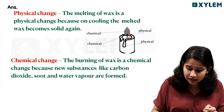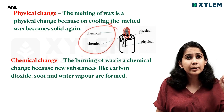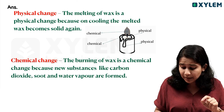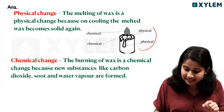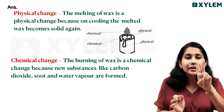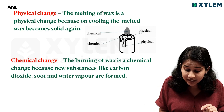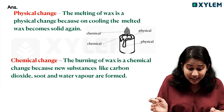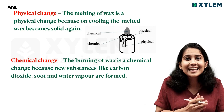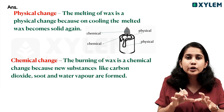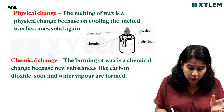When the candle burns, the wax melts. At the same time, the wax burns. The burning is the chemical change, and the melting of wax is the physical process. So when a candle burns, you can see two changes: the melting of wax is the physical change, and the burning is the chemical change.